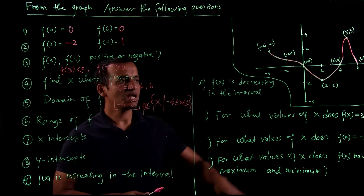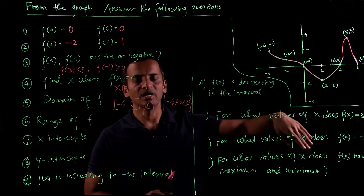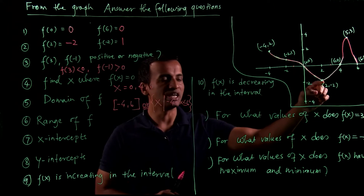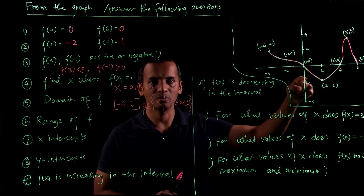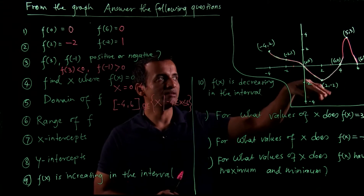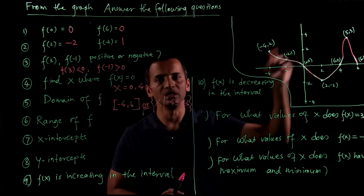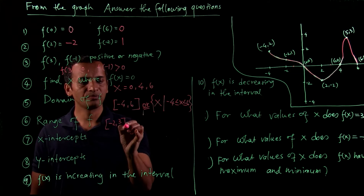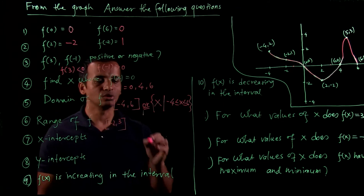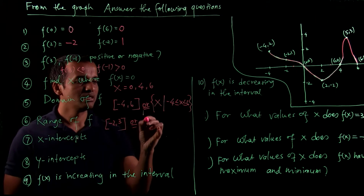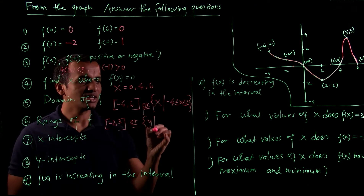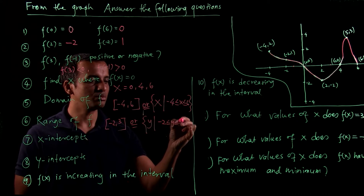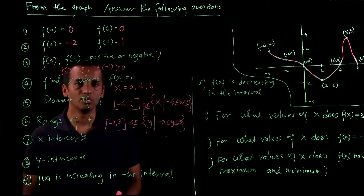How about the range? What are all the values of y? The smallest value of y is negative 2, because that is the lowest point the graph reaches. The highest value of y is 3. So the range is negative 2 to 3, or you can write: y such that negative 2 ≤ y ≤ 3.